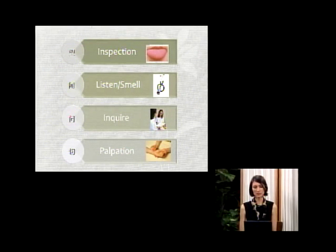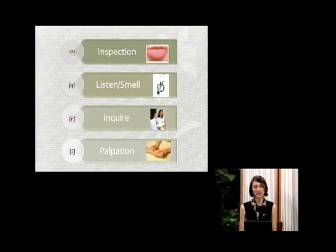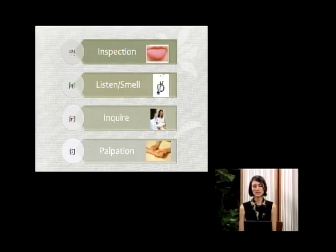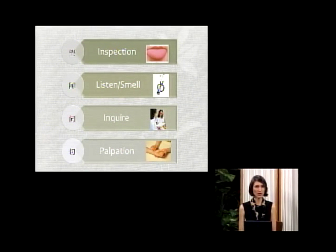Most importantly, we look at the tongue. In Chinese medicine we have something called tongue diagnosis, which is very special to Chinese medicine. We look at the color, size, shape, and coating of the tongue to tell us about the different organs, qi, blood, and the conditions of all those.